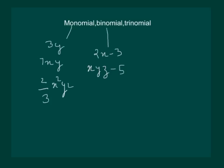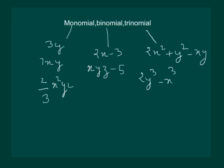An algebraic expression containing three terms is called a trinomial. Consider the example 2x² + y² - xy. In this expression we have three terms: 2x², +y², and -xy — hence it is a trinomial. Another example can be 2y³ - x³ + 3x²y. This expression again has three different terms, hence it is also an example of a trinomial.